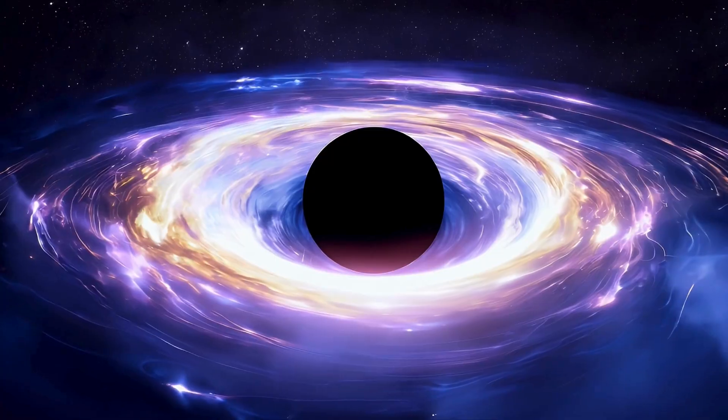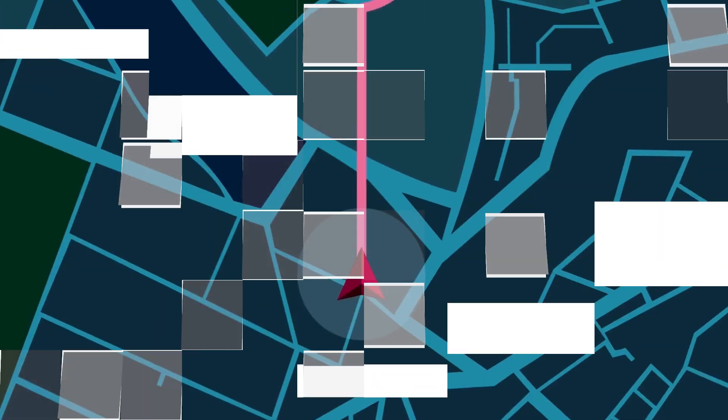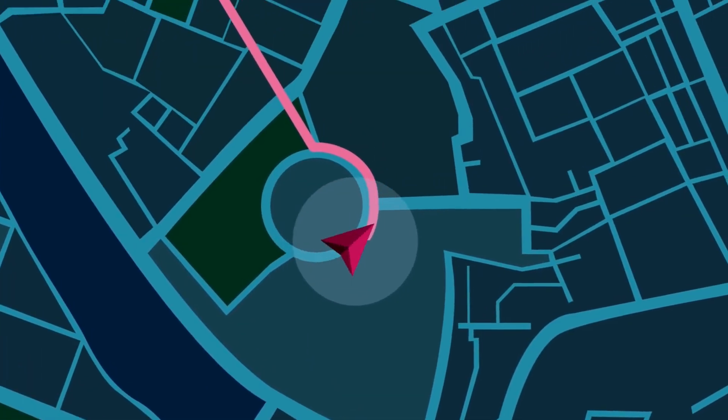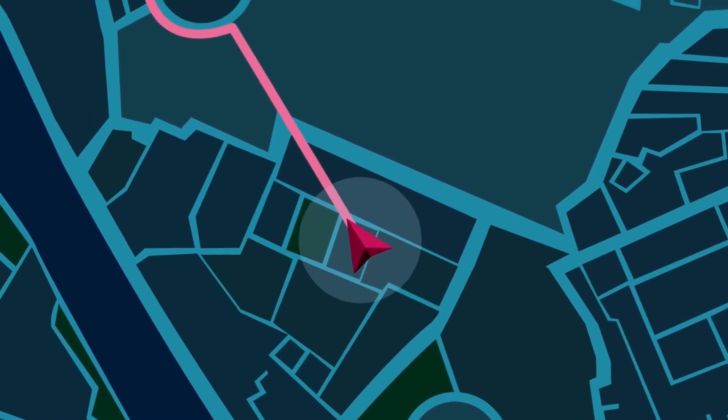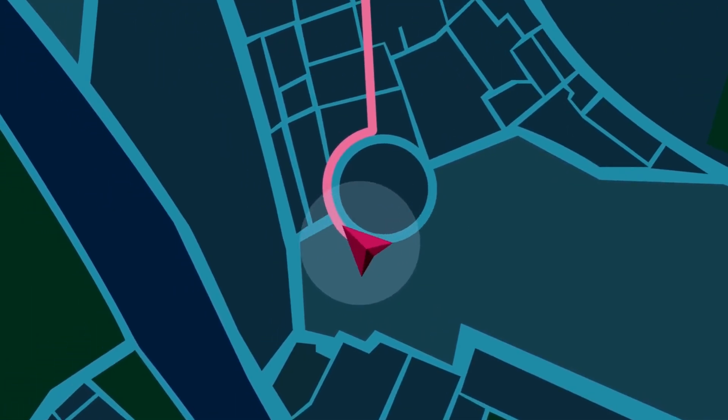This bending of space-time has real-life effects, like making GPS satellites run on slightly different time scales, because they're farther from Earth's gravity.